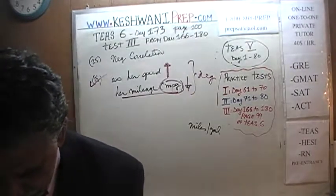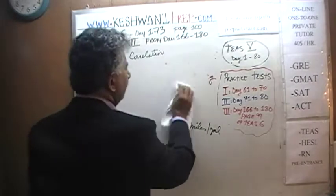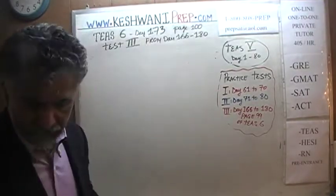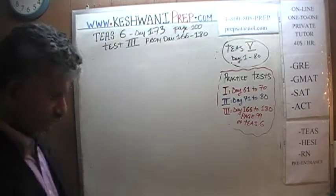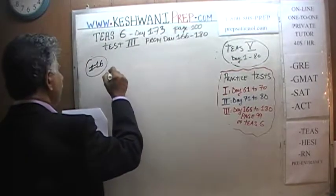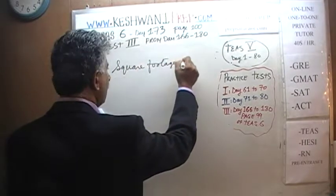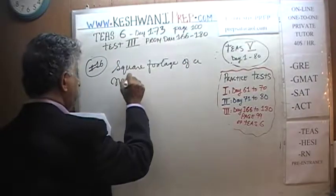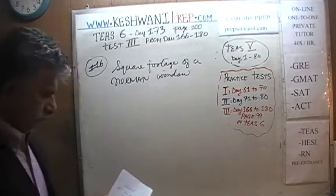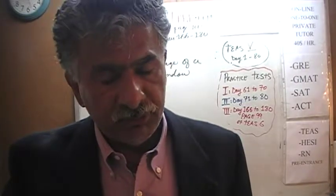Let's do the next problem, number 16. Some of these problems are just weird, and some are quite straightforward — meaning they require some calculation and that's it, such as the one we are about to do. Number 16 asks us to compute the square footage of a Norman window.